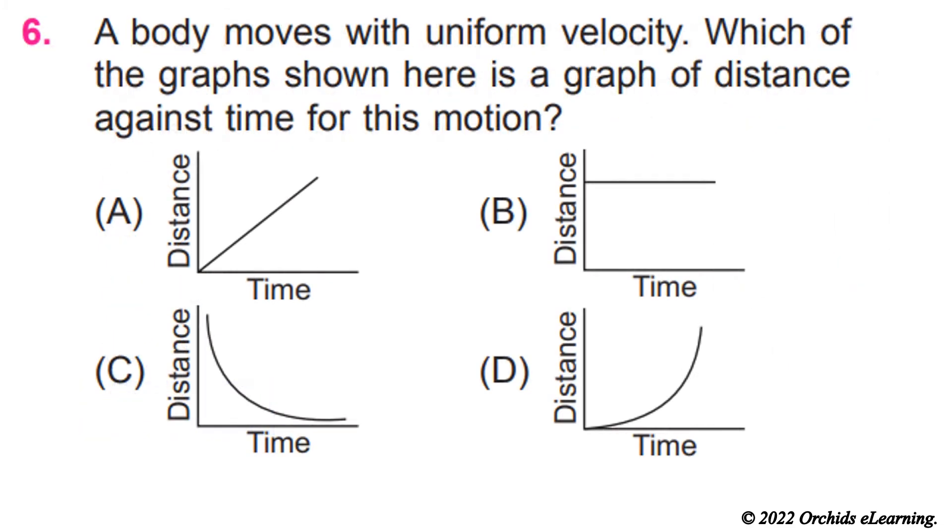A body moves with uniform velocity. Which of the graphs shown here is a graph of distance against time for this motion? Answer A.